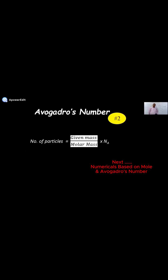So what is Avogadro number? It is 6.02 × 10²³.